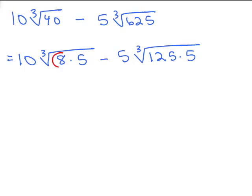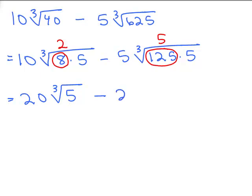Okay, so cube root of 8 is 2, cube root of 125 is 5. So for the first term I've got 10 times 2, 20 and what I'm left inside is just the 5 so I have cube root of 5 minus 5 times 5 will give you 25 and I've got a cube root of 5.